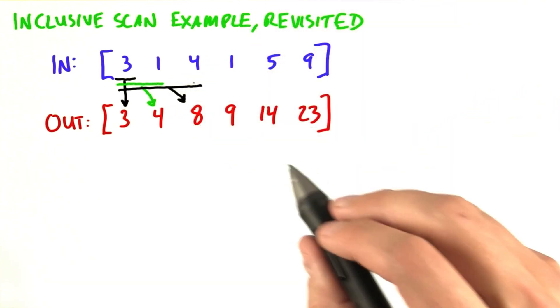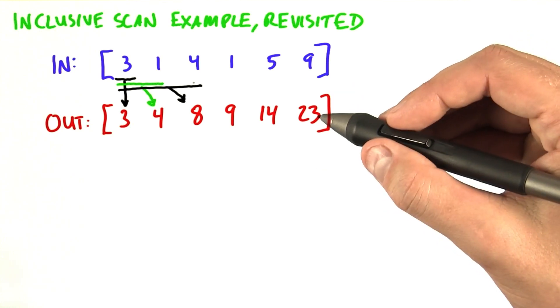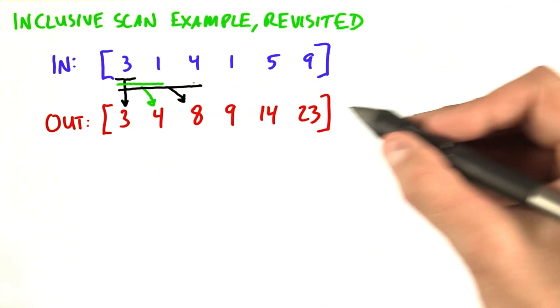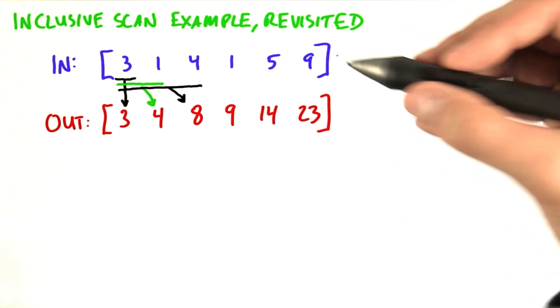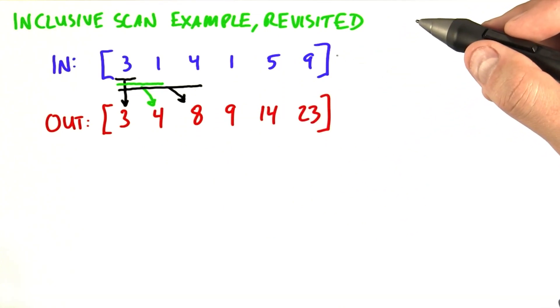In general, the nth output element is the reduction of the first n input elements. So if we want to compute this output as a function of the input, we can do that with the tools that we already have at our disposal.